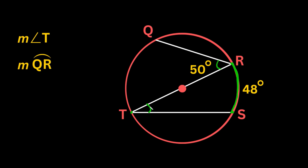There's a relationship between the inscribed angle and the intercepted arc: the angle is always half of whatever the arc is. So if the arc is 48 degrees, then the angle is going to be exactly half of that — 24 degrees. So the measure of angle T is simply 24 degrees.